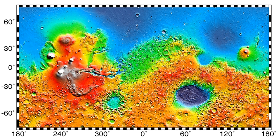Planitia (plural: planitiae) is Latin for plane. It is the IAU descriptor term for features which are "low planes".